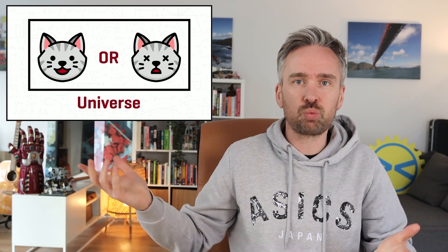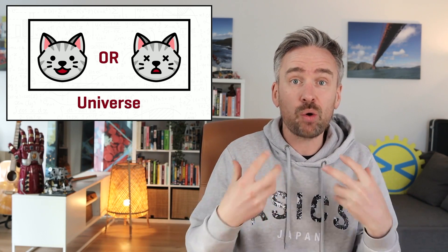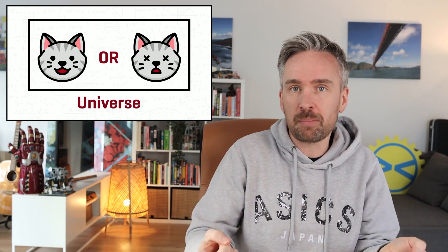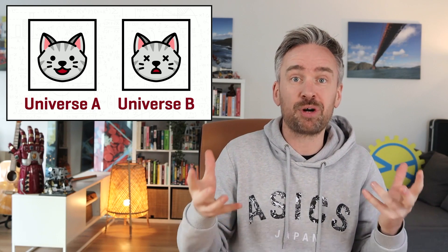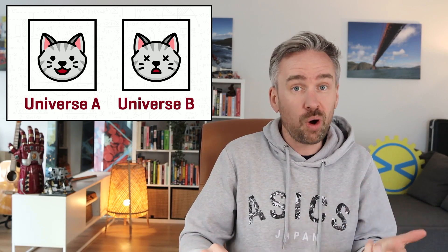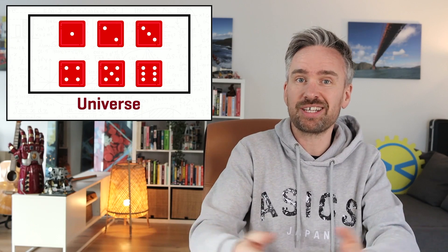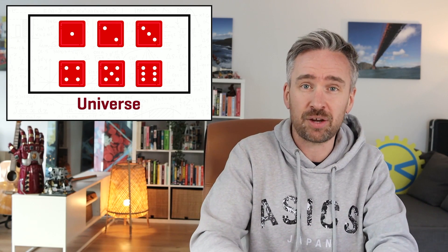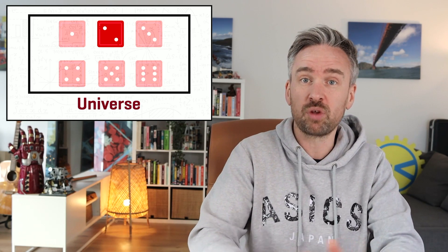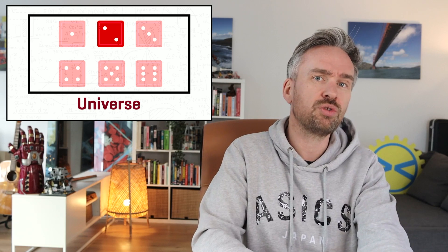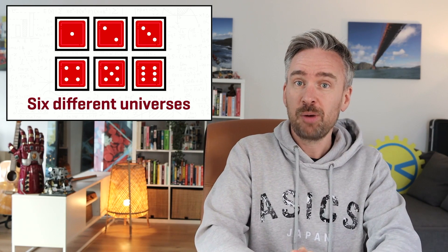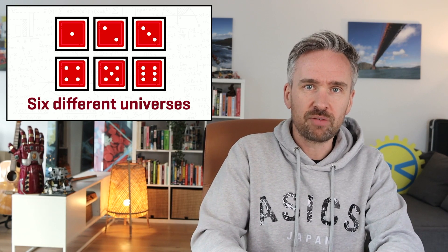Let's imagine a few examples. You have a situation in our universe where the cat is either alive or dead. But according to the many worlds interpretation, it's actually a case of having two separate universes — universe A or universe B — where in one the cat is alive and in the other the cat is dead. This will be the case for anything in the universe where multiple outcomes are possible. Imagine throwing a dice: there are six options, and in our universe one of those options comes to fruition. But according to the many worlds interpretation, all possibilities happen — but they all happen in different universes in the multiverse.